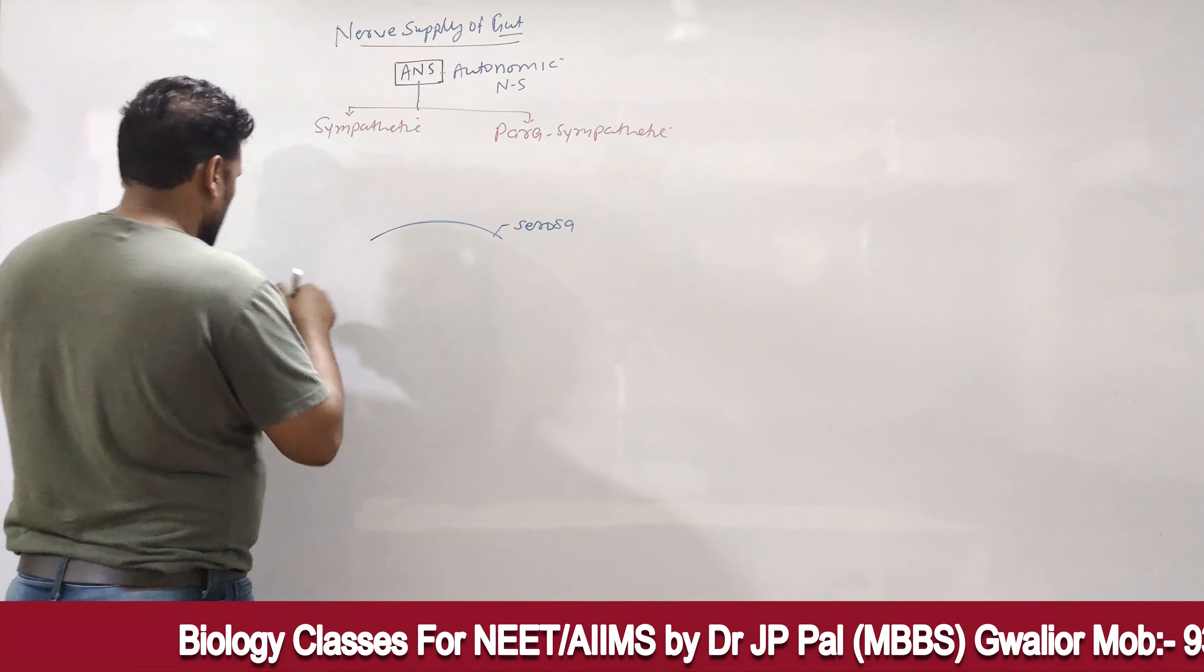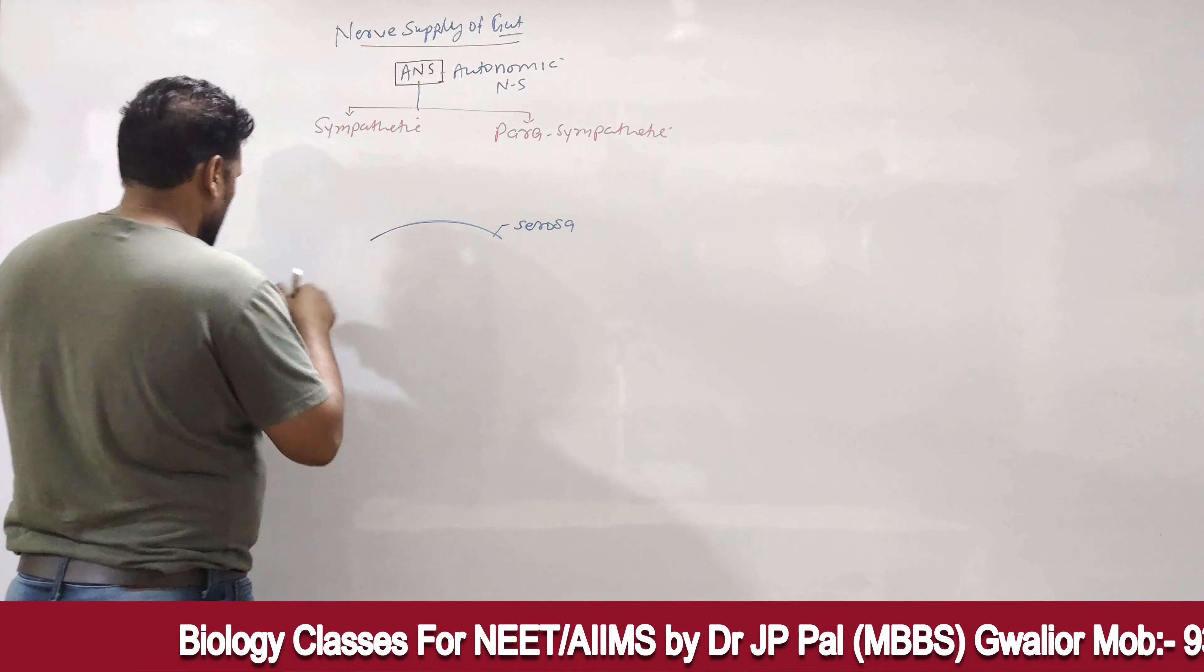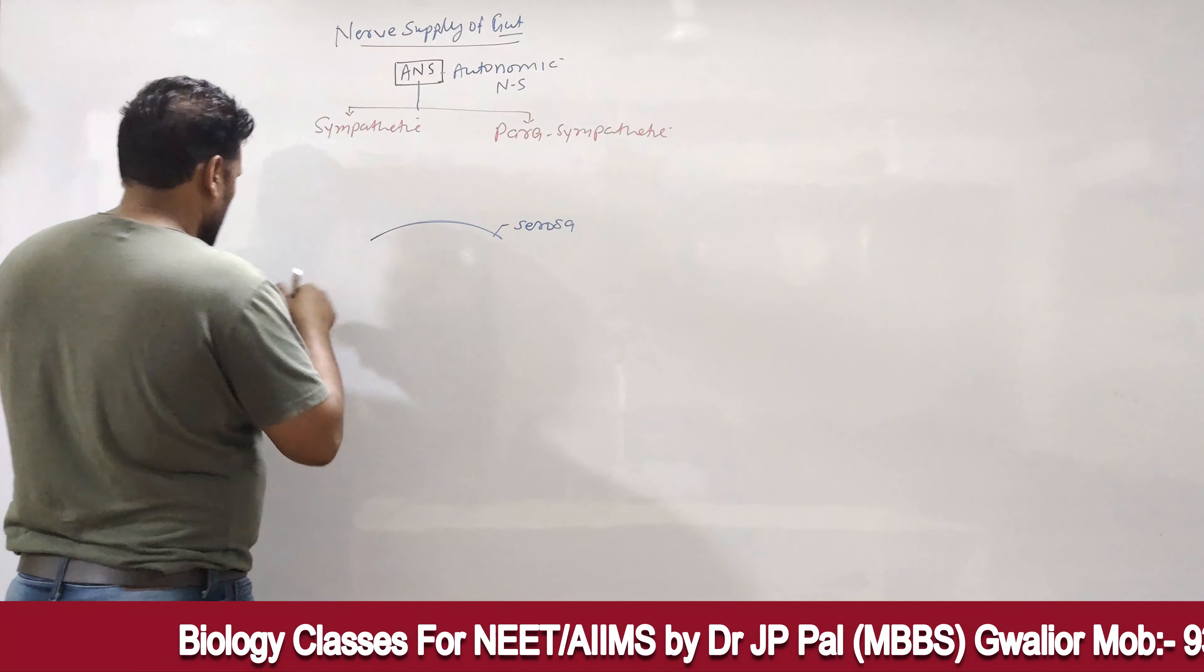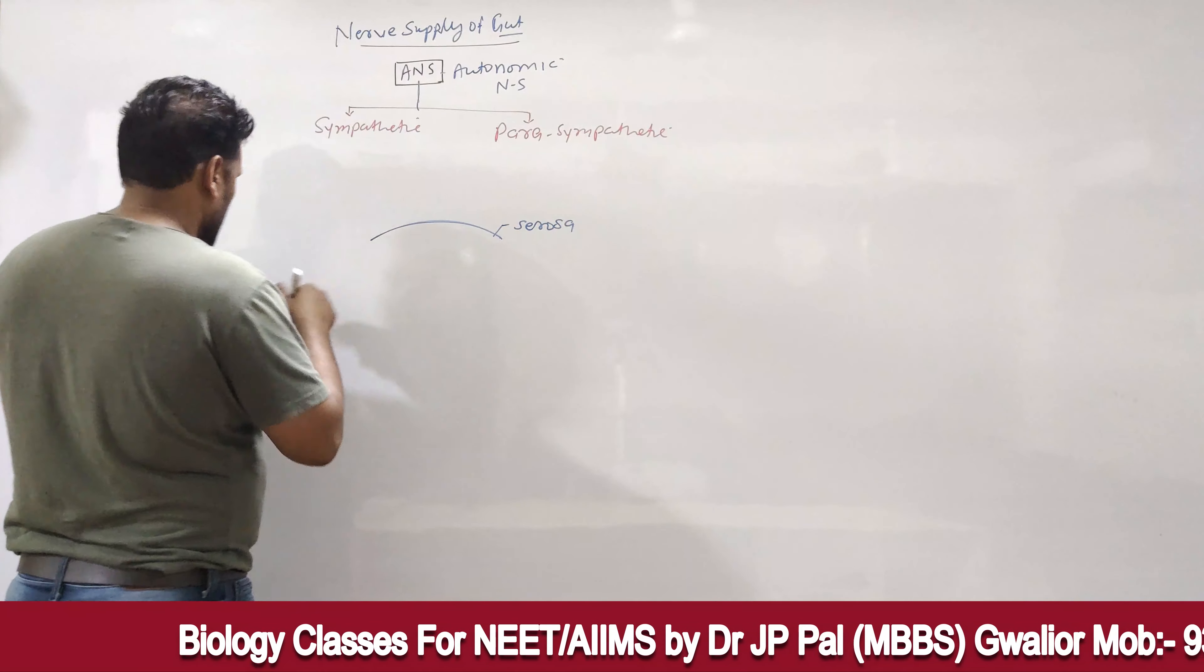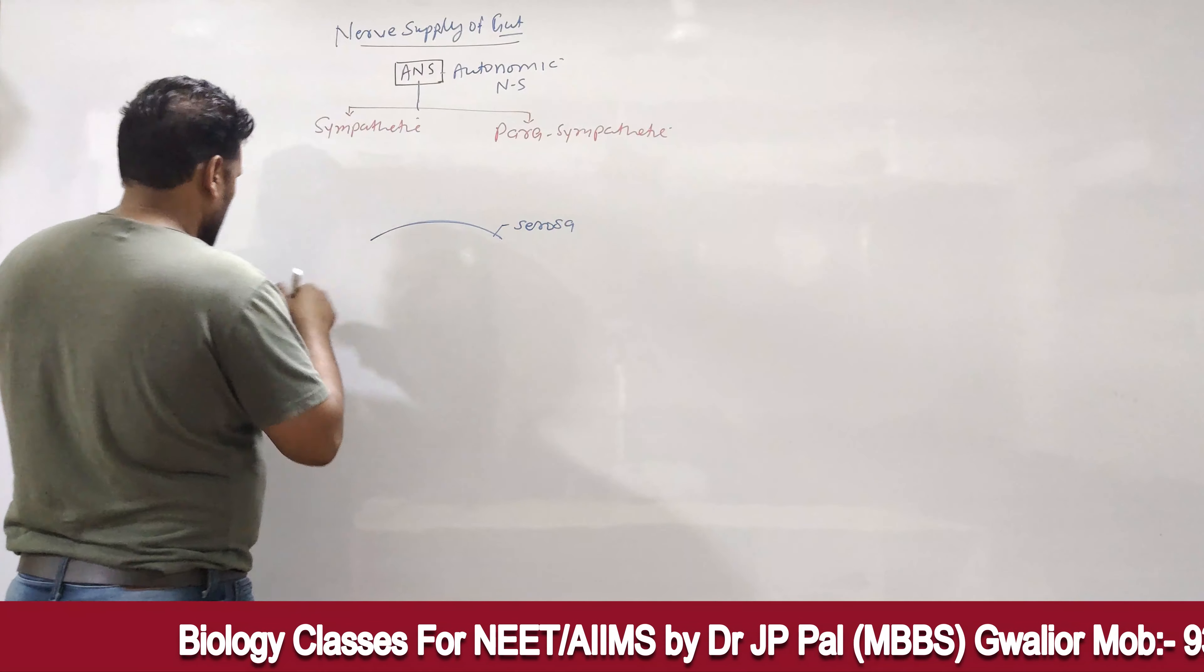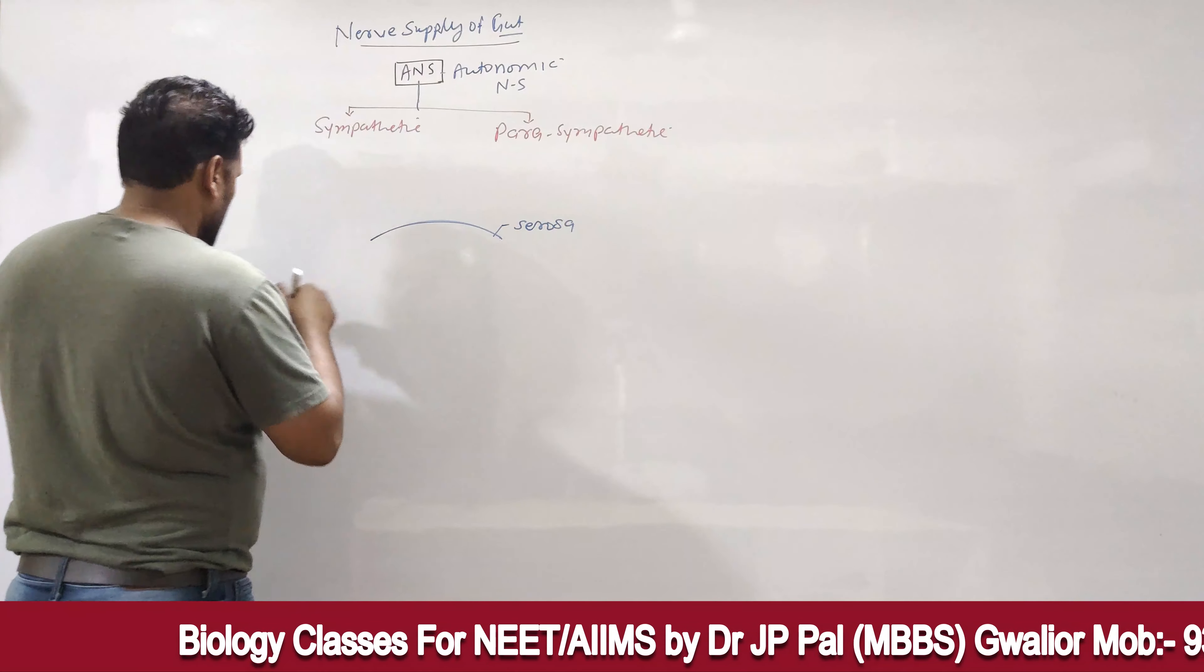One is Sympathetic and second one is Parasympathetic. These are two divisions, and we discuss the Sympathetic and Parasympathetic nervous system. These branches are supplied by the elementary channel.